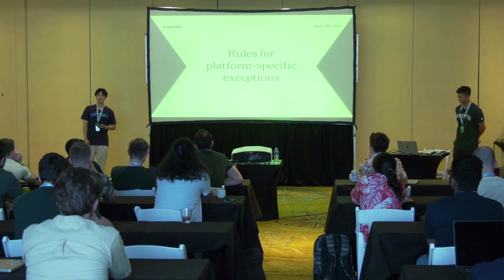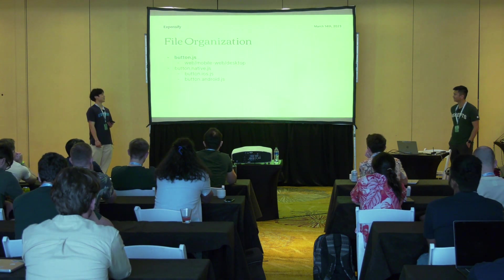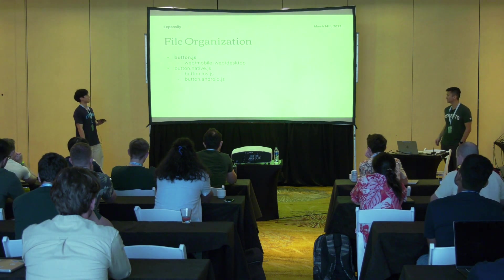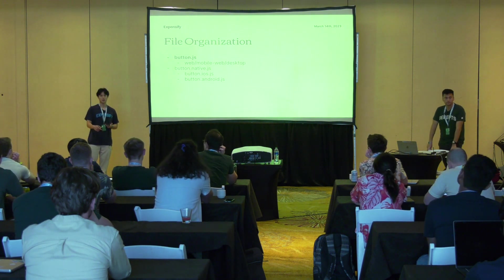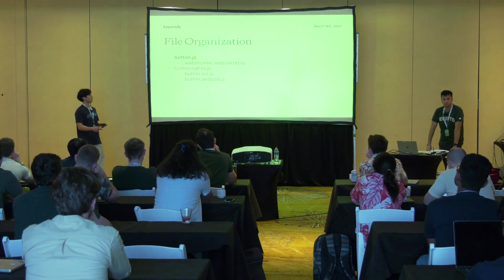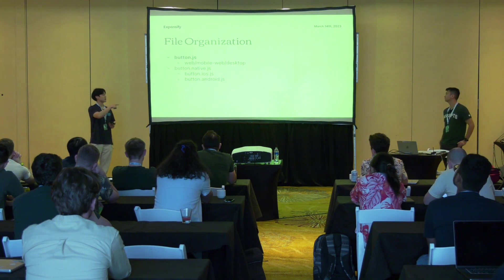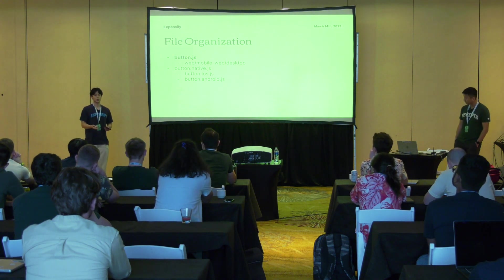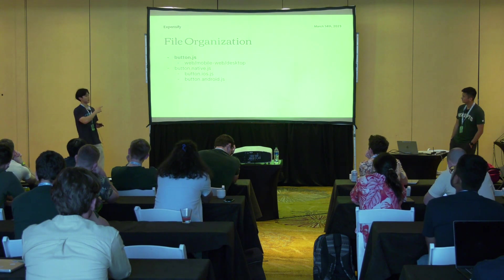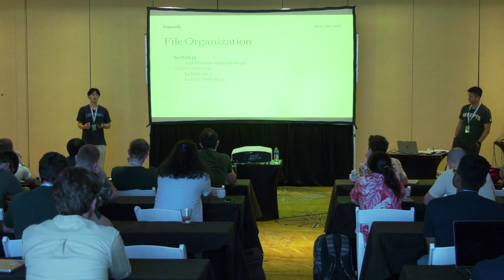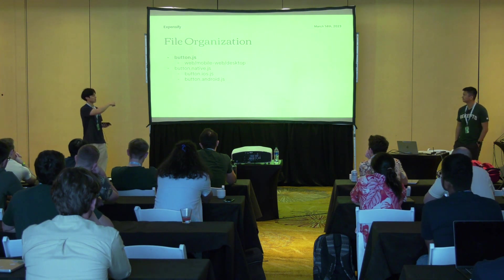Now let's talk about rules for platform-specific exceptions — cases where you're actually writing platform-specific code. We have a file organization syntax. If you just have a button.js component, all platforms will point to that JavaScript file — web, mobile web, desktop, Android, iOS. If you add a button.native.js file, it'll start to separate out: web, mobile web, and desktop point to button.js, and iOS and Android point to button.native.js. And if you want the most fine-tuned control, you can use .iOS.js and .android.js.